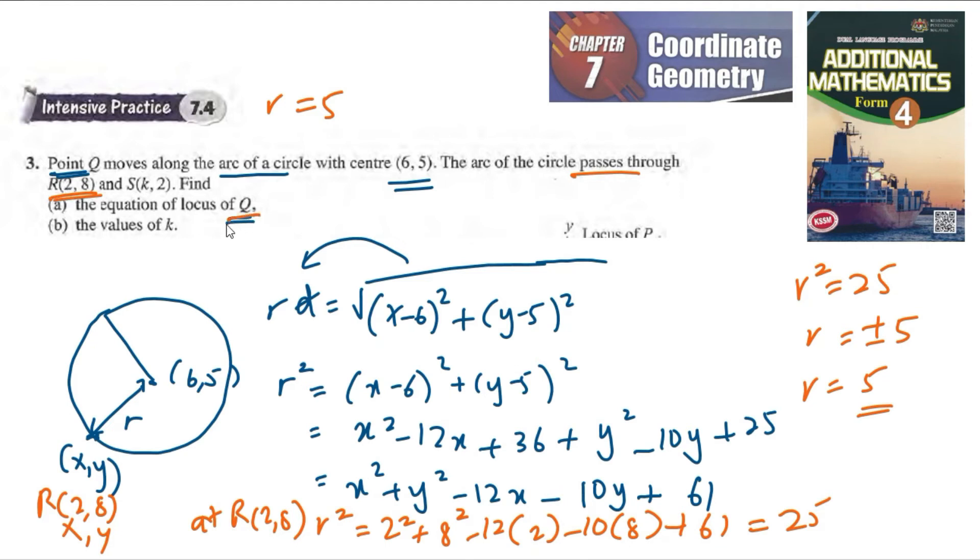By the equation of locus Q, now we have R. We have this equation before, right? It's equal to 25. Now we have R, so we can just substitute.